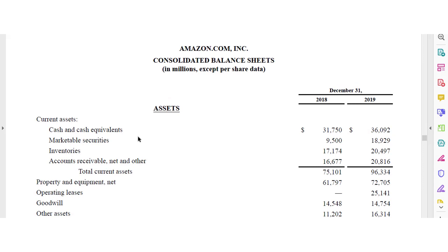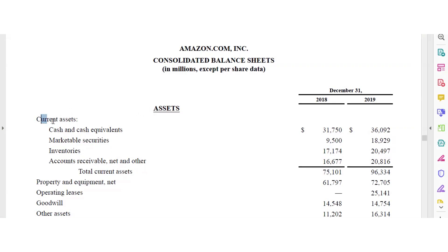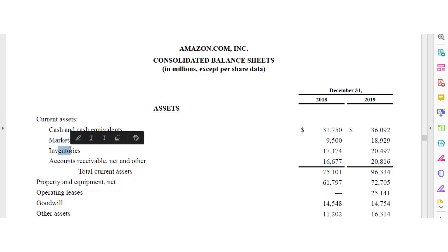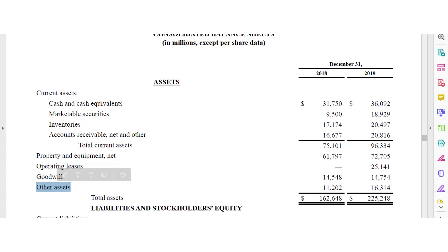Now let's take a look at a few live examples, starting with Amazon. As you can see, Amazon has their current assets: cash, short-term investments and marketable securities, inventories, accounts receivable, and then non-current assets: property, plant and equipment, operating leases — also common depending on the company and industry — goodwill, and other assets. Those form their total assets.